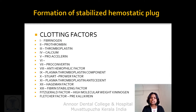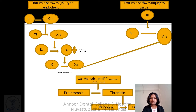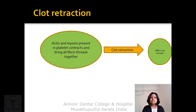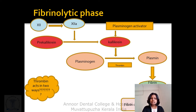Formation of the stabilized hemostatic plug occurs via intrinsic and extrinsic pathways, involving clotting factors 1 through 13. Both pathways converge and lead to the common pathway. Clot retraction is by means of actin and myosin present in blood vessels, which helps platelets contract and bring fibrin threads together. The fibrinolytic phase involves prekallikrein and kallikrein, which help convert plasminogen to plasmin, thereby accomplishing fibrinolysis.